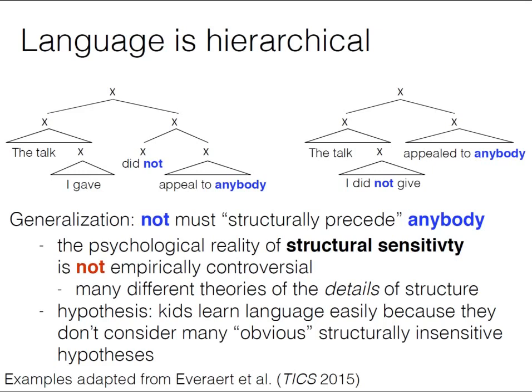An interesting hypothesis, advanced by people like Noam Chomsky, is that one reason kids learn language so quickly is because they never consider the wrong hypothesis. From day one, they compute mental representations in terms of structure — they can't even represent the hypothesis that sequential precedence is a valid rule. They always think about language in terms of structure. The idea that by changing the hypothesis class we might change learnability is really important.